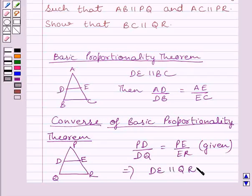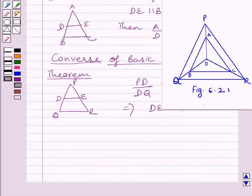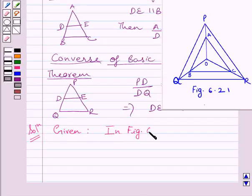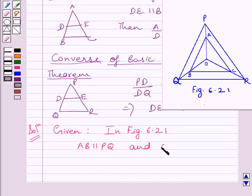This is the converse of the Basic Proportionality Theorem, and this is the key idea to solve the given question. Now let us start the solution. Given: in figure 6.21, AB is parallel to PQ and AC is parallel to PR. We have to prove that BC is parallel to QR.